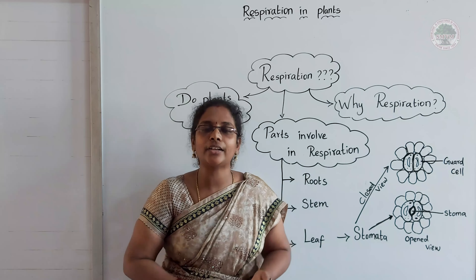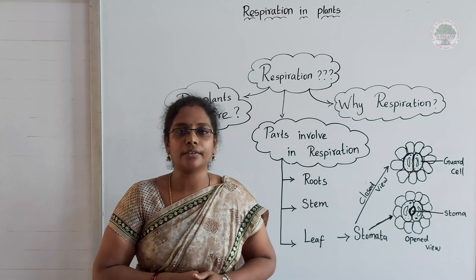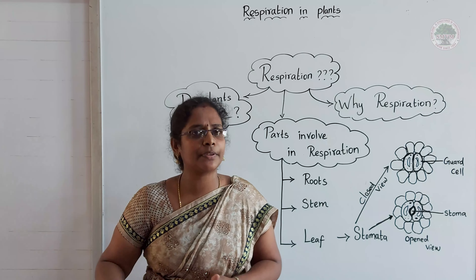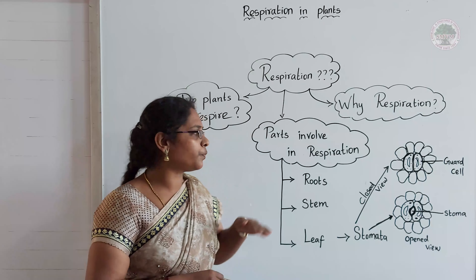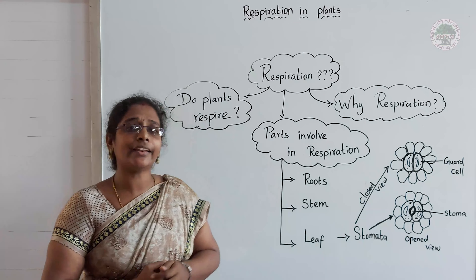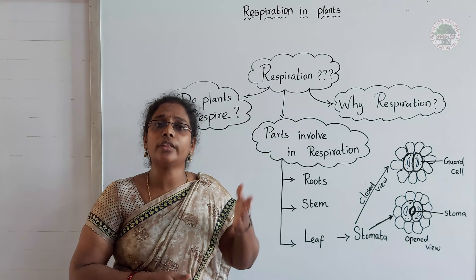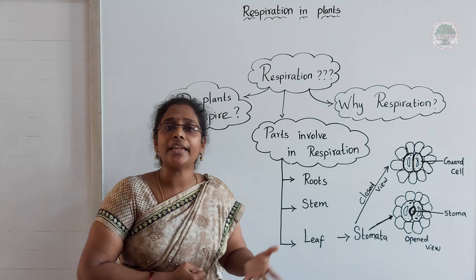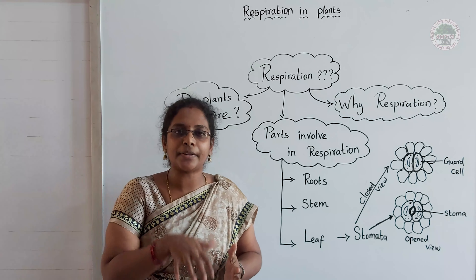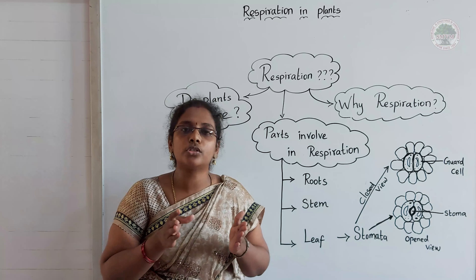So many body functions are going on in the plant. For those life processes, this energy is being utilized — that's why plants are respiring. Now, which parts of the plant are involved in respiration? Each and every part of the plant is involved. First: the root. We know the atmosphere contains oxygen, but the root is present under the soil. How does the root receive its oxygen? How can it respire even though it is under the soil? Even so, roots can also respire.